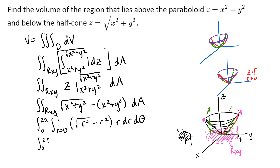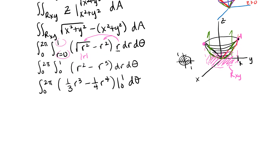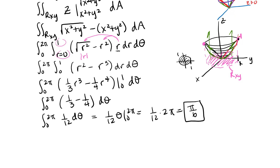Before integrating, I'll simplify. The square root of r squared is technically the absolute value of r, but since our r values are only positive here, I can just write r. I also need to distribute the extra r from dA through the expression: the square root of r squared becomes r, times the other r gives r squared, minus r cubed. The integration is then straightforward. After integrating with respect to r and plugging in limits, I integrate with respect to theta. Since this triple integral is a volume integral, we expect a positive answer.